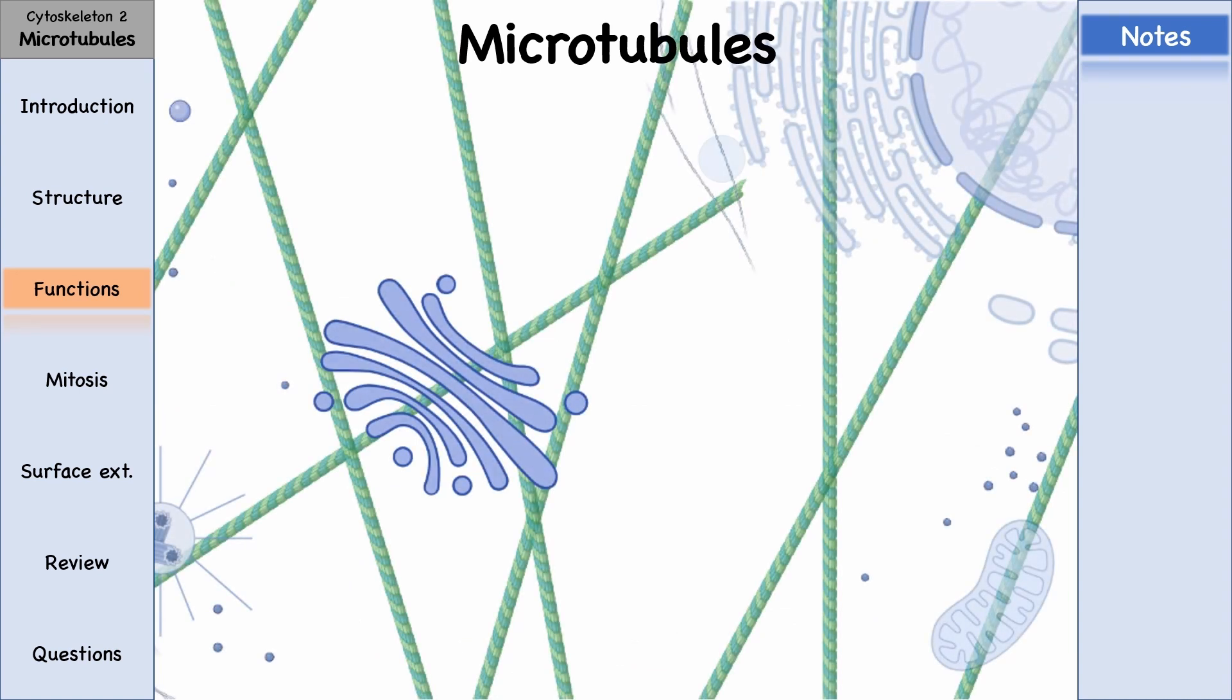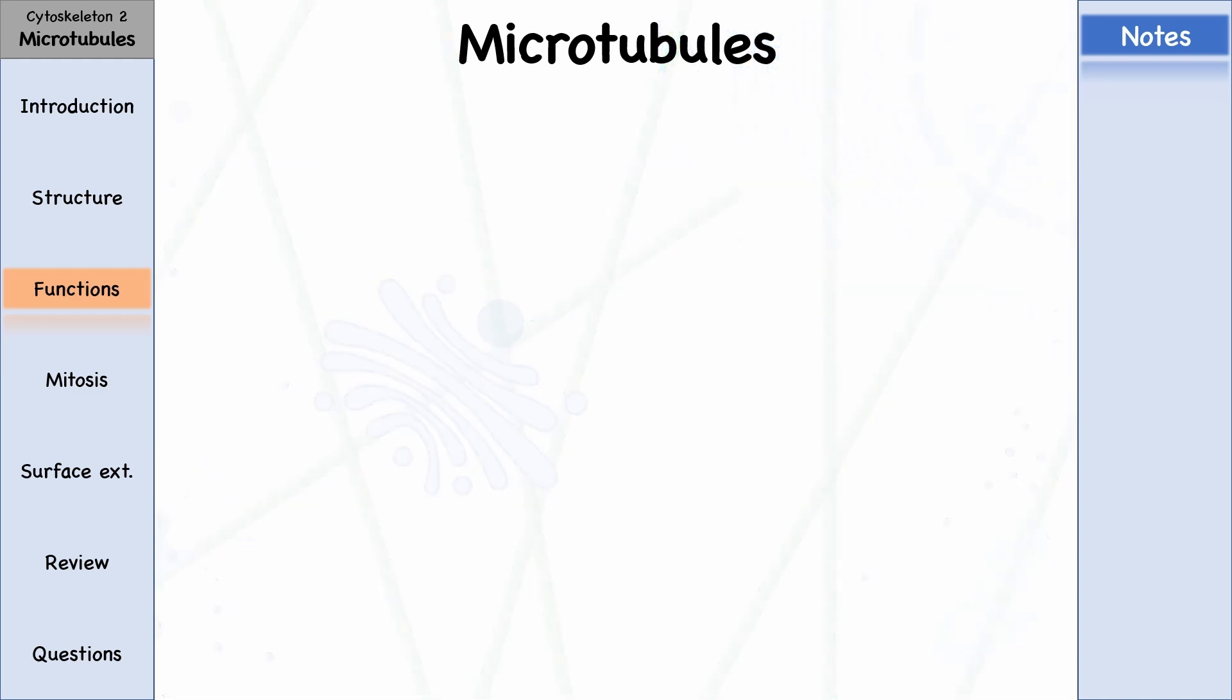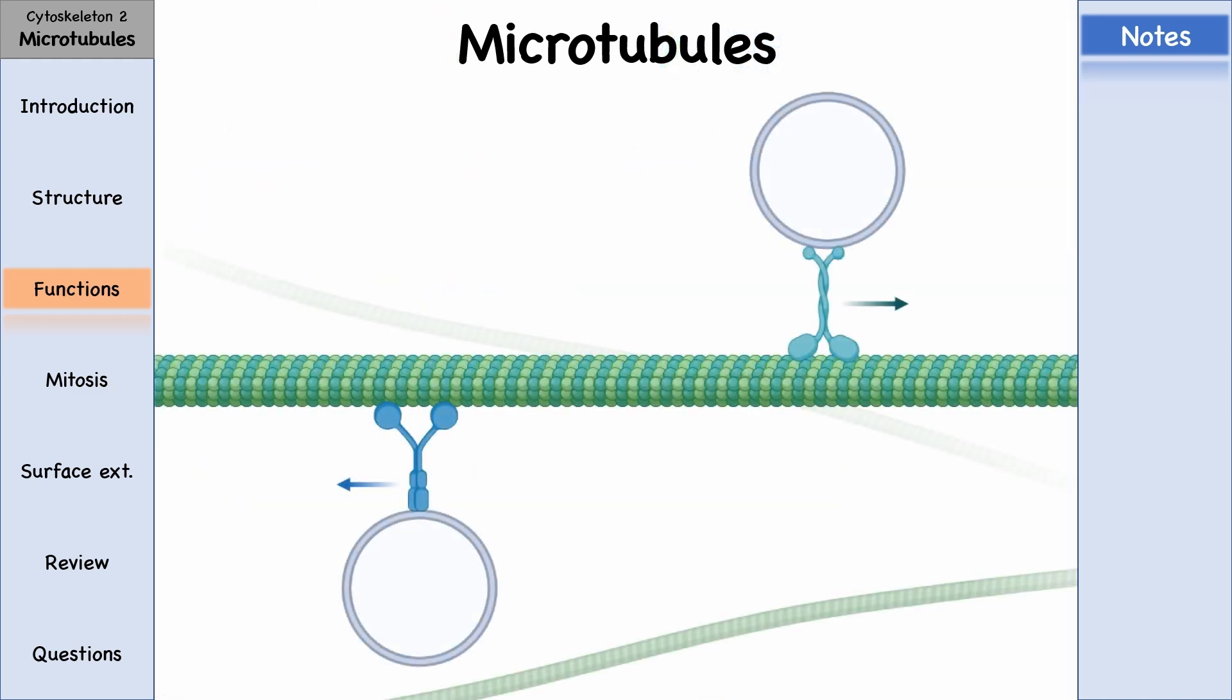For example, they transport vesicles from the endoplasmic reticulum to the Golgi apparatus, from the Golgi to the membrane, and so on. All these transports take place on the microtubules.